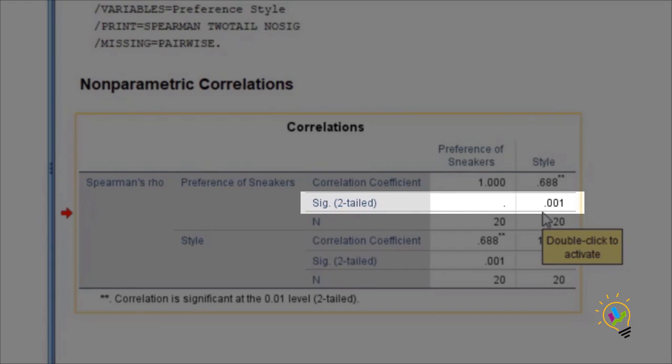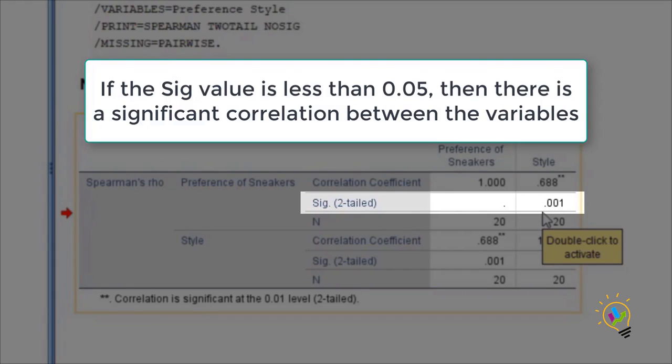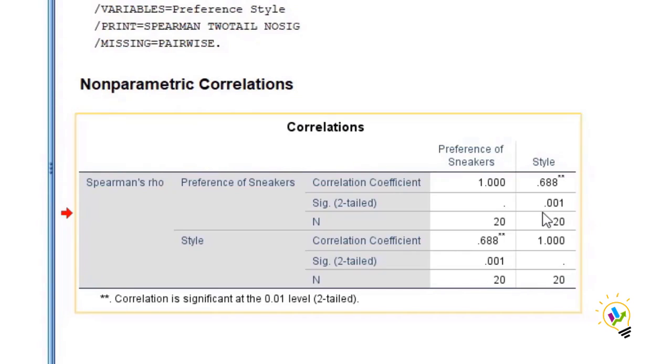If the significant value is less than 0.05, then the correlation between the two variables is significant. So in this case, the correlation between preference and style is significant. And now let us discuss the correlation coefficient.